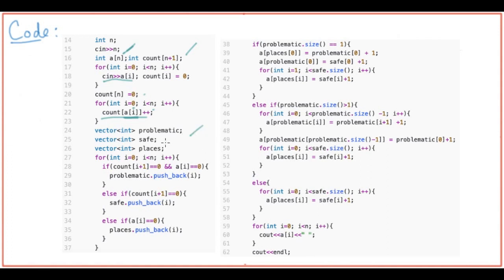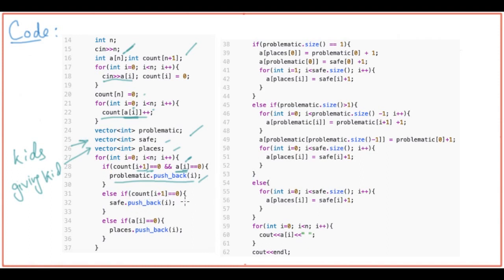I have three vectors: problematic, safe, and places. Safe holds the values I can fill in freely — the kids who haven't received a gift. Places holds the positions to be filled — who is the gift giver that still has a zero. Then if a[i] is zero and count[i+1] is also zero, this is a problematic index, so I push it to problematic. If only count[i+1] is zero, I push to safe. If a[i] is zero, I push to places.